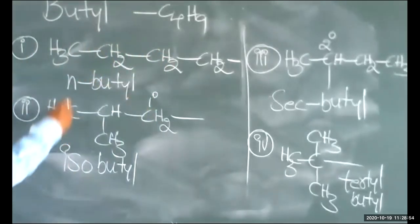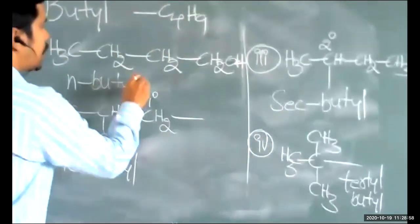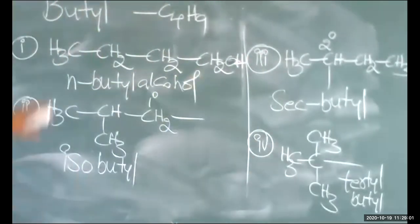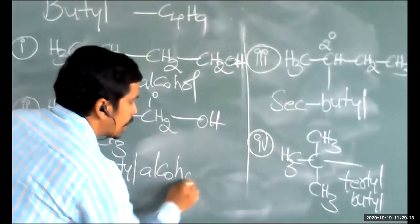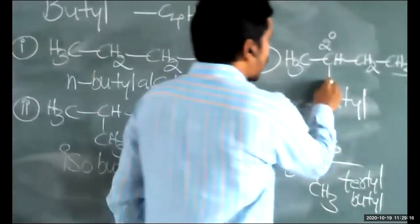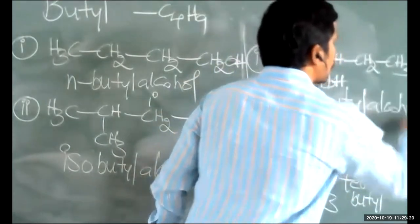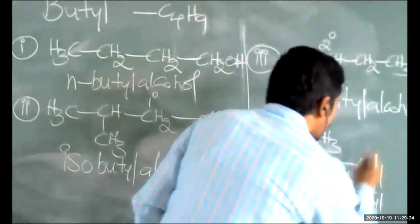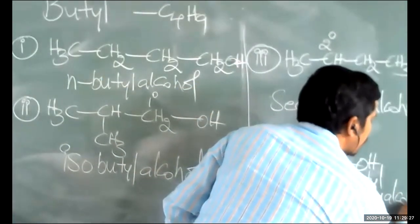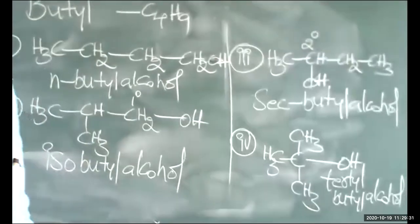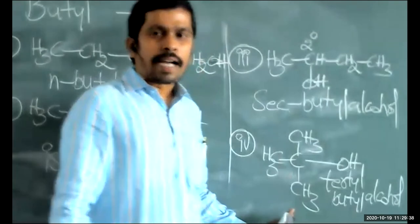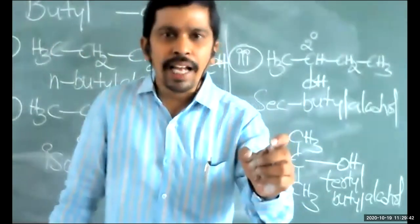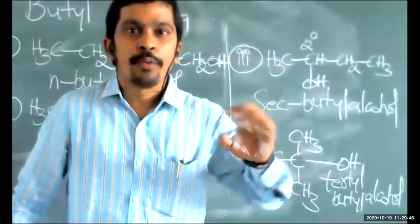Since butyl groups are of four types, four types of butyl alcohols are possible: n-butyl alcohol (CH₃–CH₂–CH₂–CH₂–OH), isobutyl alcohol (CH₃–CH(CH₃)–CH₂–OH), secondary butyl alcohol, and tertiary butyl alcohol. The question now arises: when the butyl alcohols undergo dehydration, what are the products?